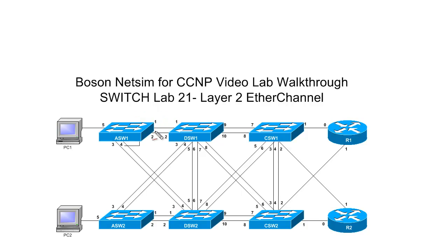EtherChannel, which is the primary topic of this lab, is a technology that allows us to have the benefits of redundancy but lets us continue to use both links to carry traffic. EtherChannel allows us to take switch ports and group them together so that spanning tree sees them as a single link. In this lab, we're going to be working with distribution switch one and distribution switch two and the links that connect them directly — specifically ports five and six on each switch. We're going to use EtherChannel to bundle these together so that spanning tree only sees them as a single link, keeping both links up and using both to carry traffic.